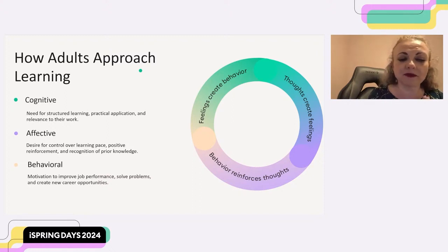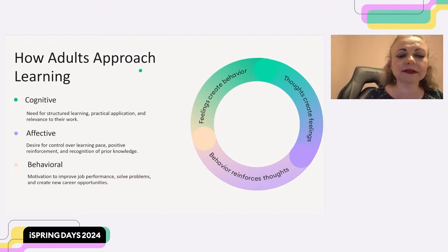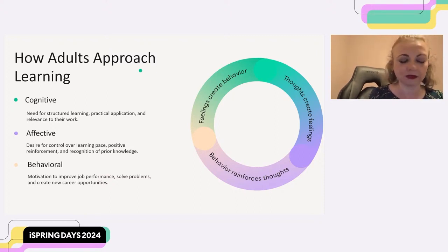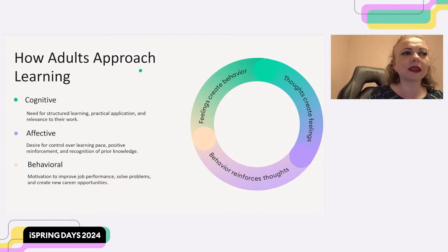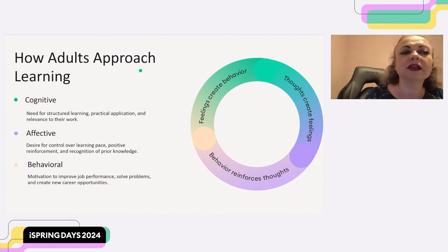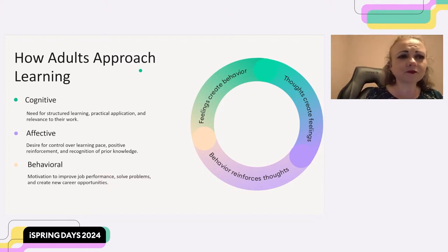Now let's move on to affective needs of adult learners. Affective needs deal with the emotional aspect of learning. Adults desire control over their learning pace — they may prefer to learn at their own speed and have flexibility to revisit specific topics. Positive reinforcement through feedback and recognition is also very important for adult learners' motivation. They appreciate feedback that recognizes their progress and highlights their strengths. Additionally, adult learners often have a wealth of experience and prior knowledge, so effective e-learning builds upon this existing knowledge base.